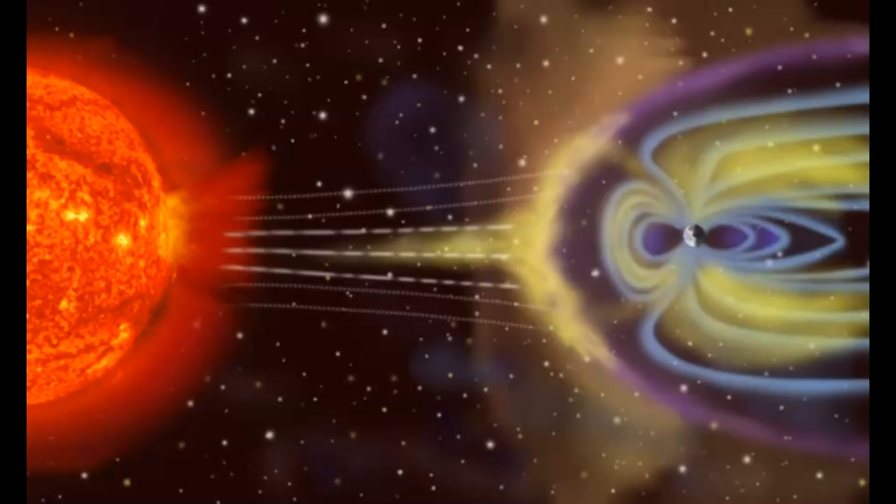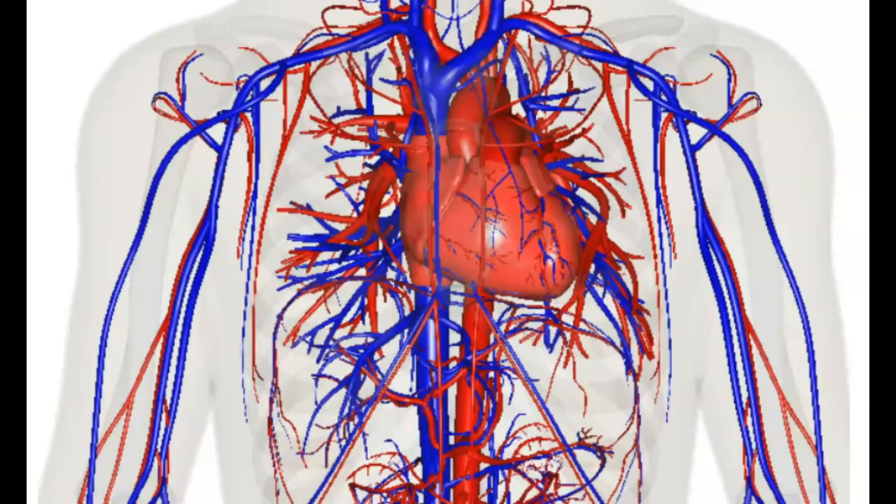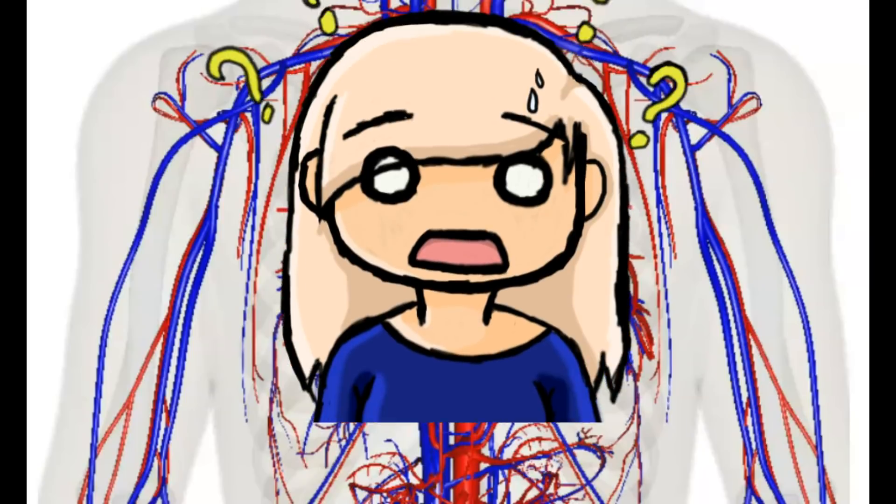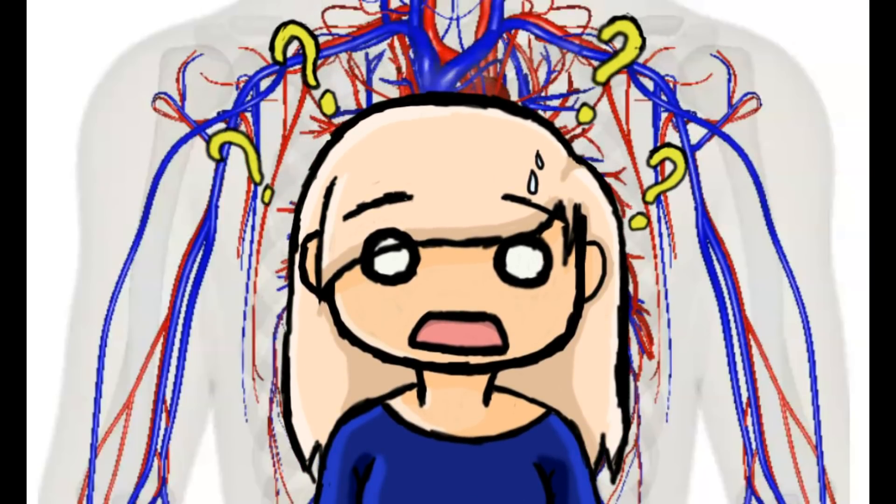In extreme cases it may cause power blackouts, but a new research paper shows how the weakening and strengthening of our Earth's magnetic field actually affects our bodies by causing heart attacks and thyroid problems.